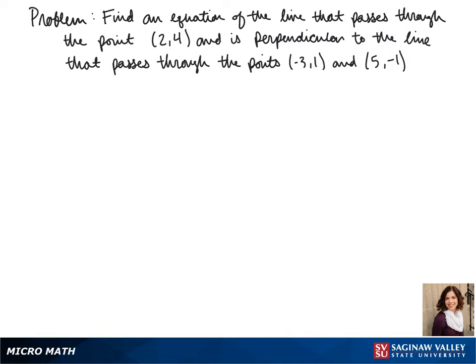Welcome to another day of algebra. Today we'll be finding an equation of the line that passes through the point (2, 4) and is perpendicular to the line that passes through the points (-3, 1) and (5, -1).